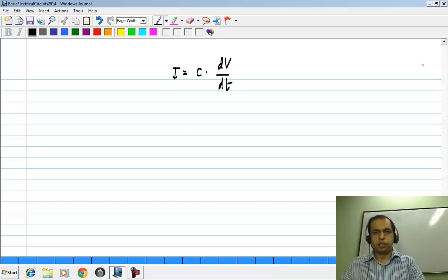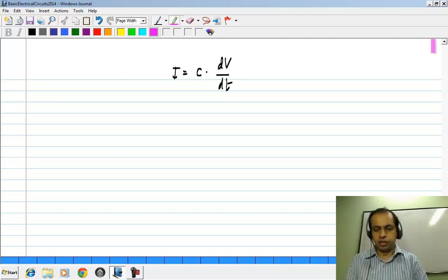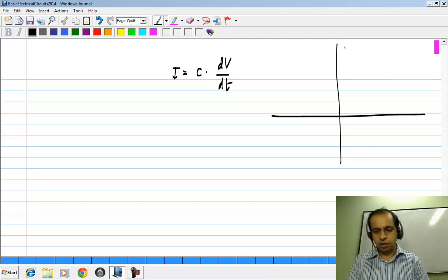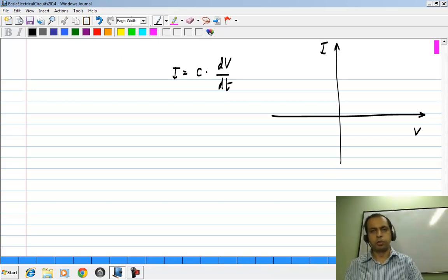Because the I V relationship of a capacitor consists of a time derivative, we cannot draw a graph of I versus V. So that is possible only if a particular value of V gives a particular value of I or vice versa. In this case, it is not possible.